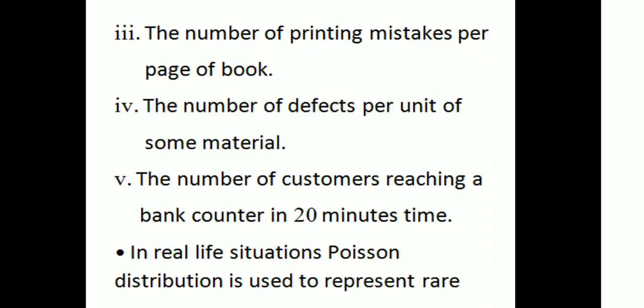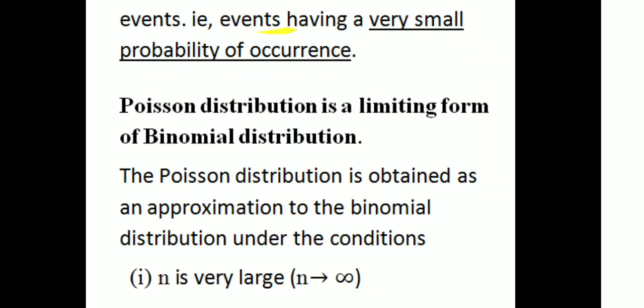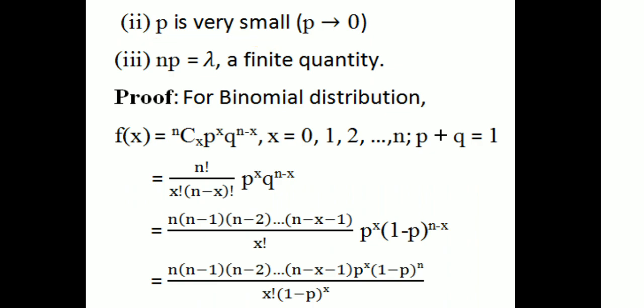In real life situations, Poisson Distribution is used to represent rare events — that is, events having a very small probability of occurrence. In such cases we will use Poisson Distribution. Poisson Distribution is a limiting form of binomial distribution under the conditions: n is very large (n tending to infinity), p is very small (p tending to zero), and np equal to lambda, a finite quantity.